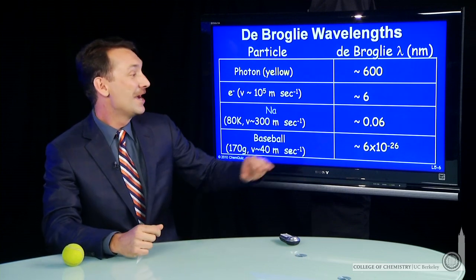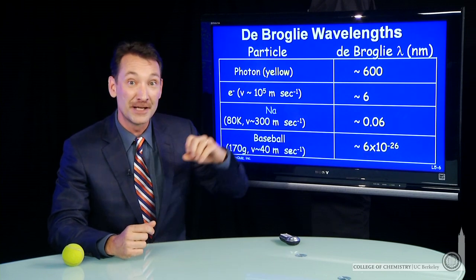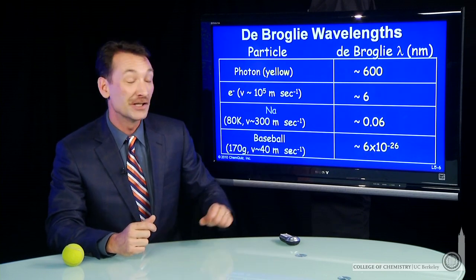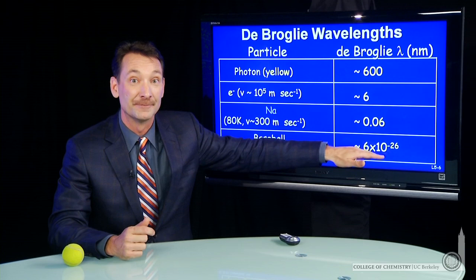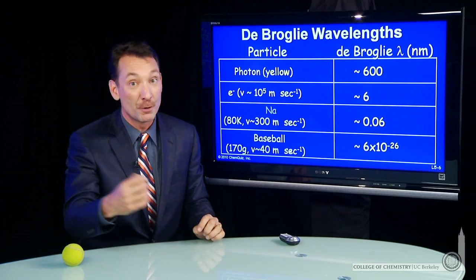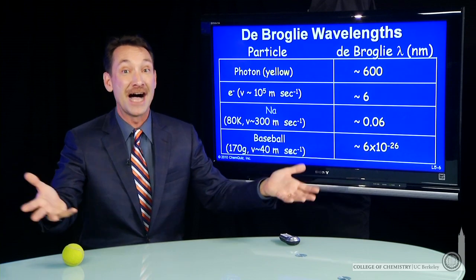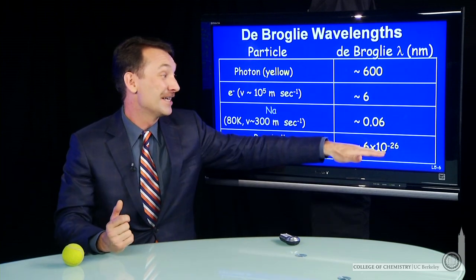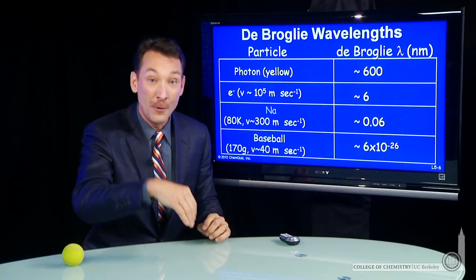We can calculate using the de Broglie relationship the wavelength, but look at how small the number is. This is 10 to the minus 26 nanometers. We were already at nanometers, 10 to the minus 9. Now we've gone to 10 to the minus 26 of those.